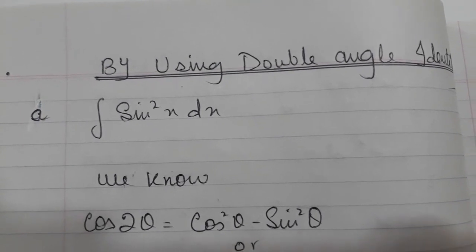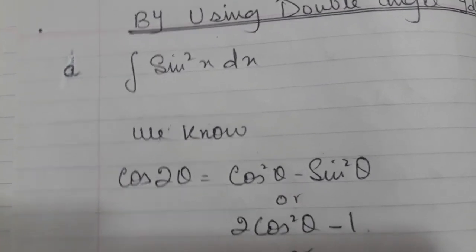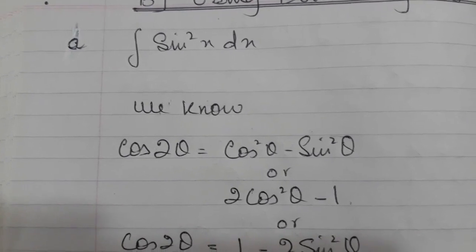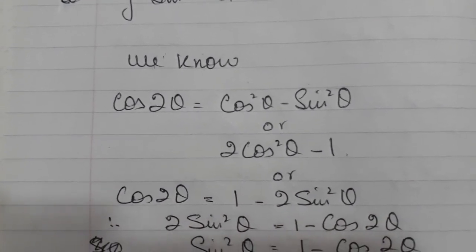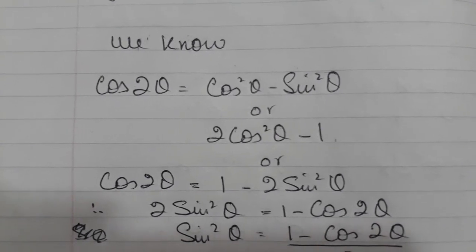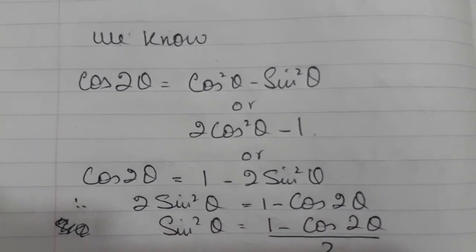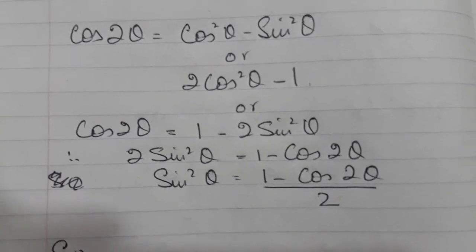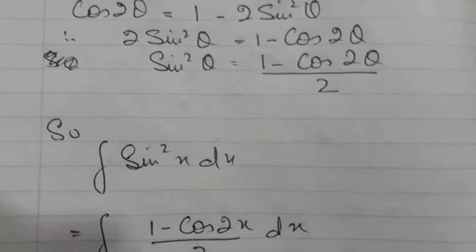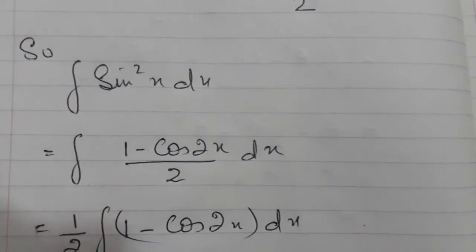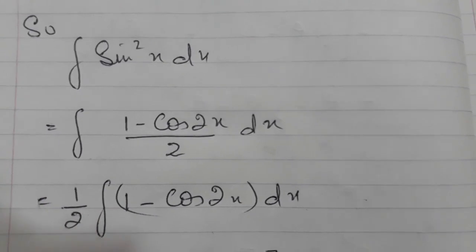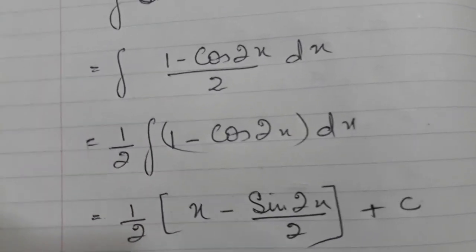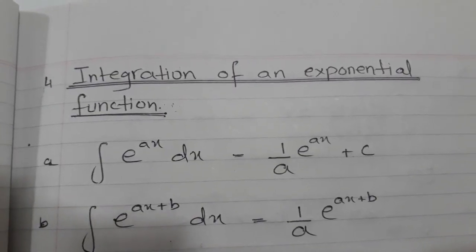Now this is an example using the double angle identity. The integration of sin²x or cos²x is solved using this method. We know that cos(2θ) equals cos²θ − sin²θ, or 2cos²θ − 1, or 1 − 2sin²θ — all of this will be given to you in MF9. Using this double angle identity, I make sin²θ the subject and get (1 − cos(2θ))/2. I then replace sin²x with this identity and simply integrate 1 and cos(2x) to get the final answer.